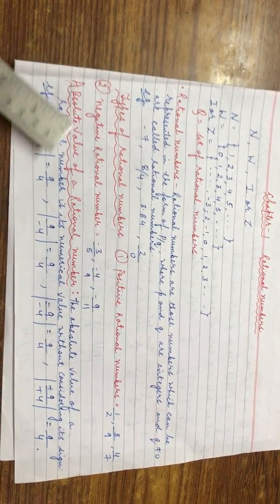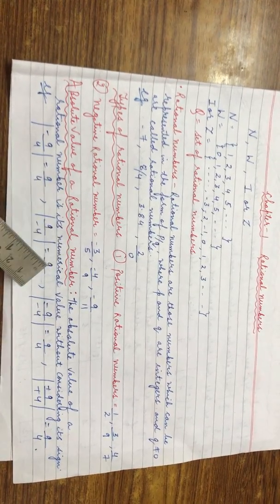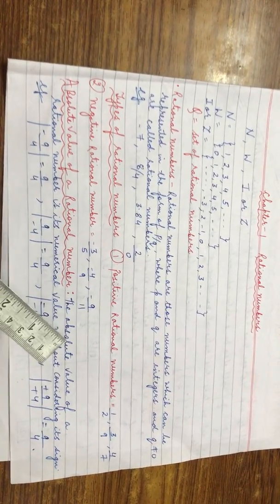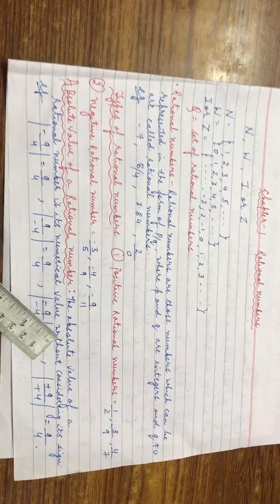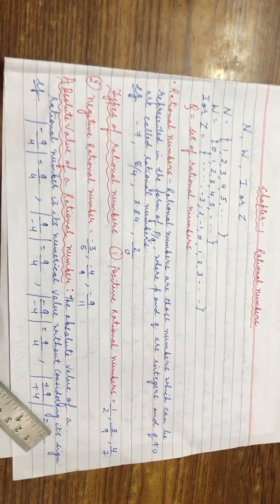Now we come to absolute value of a rational number. The absolute value of a rational number is its numerical value without considering its sign.